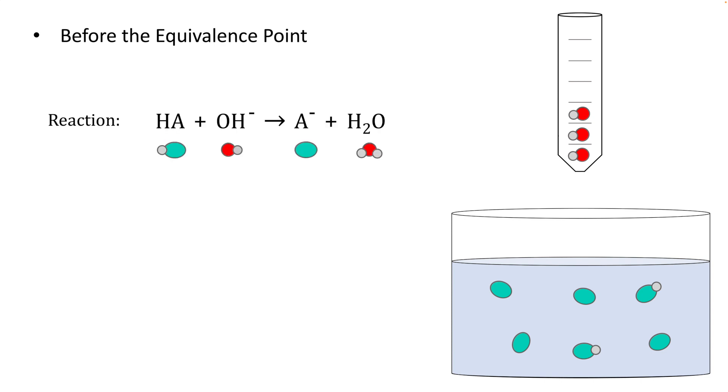If we keep on titrating, more HA's converted into A minus. At some point, maybe here, we have so little HA that we no longer have a buffer, or at least the buffer calculations aren't accurate. We can always do a calculation with the Ka expression and normal equilibrium concepts, but we're still before the equivalence point.